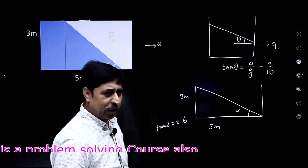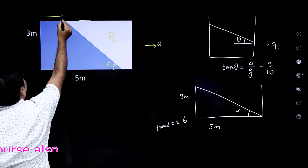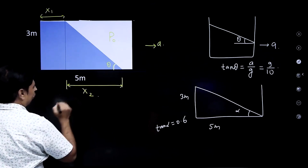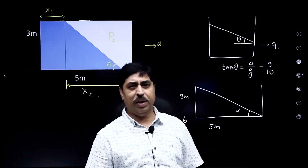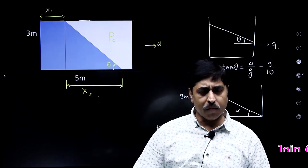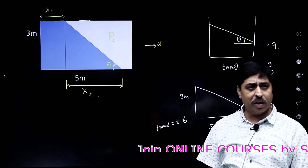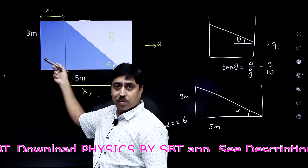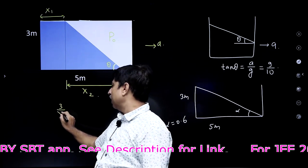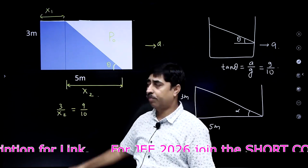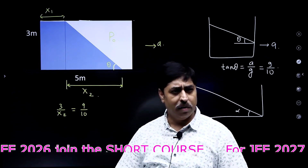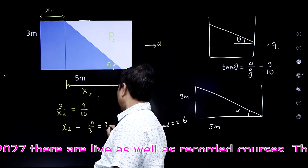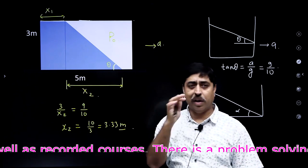Let me calculate these lengths. Let me call this x1 and this x2. I can calculate x1 and x2 just by knowing that the volume of water has not changed, and I know the angle θ where tan θ = 9/10. This height is 3 meters, so using the definition of tan θ: 3 divided by x2 equals 9/10, therefore x2 = 10/3 = 3.33 meters.